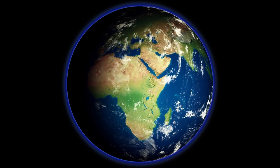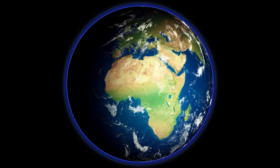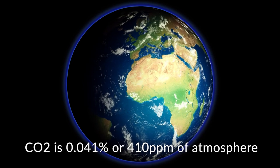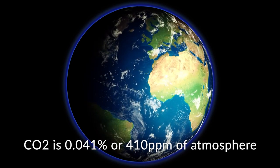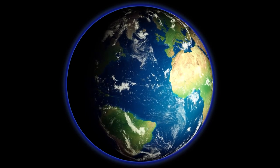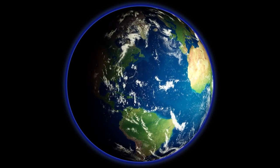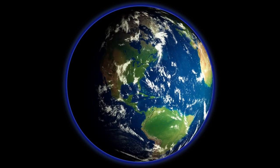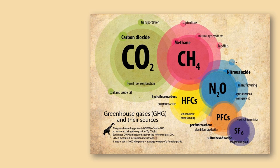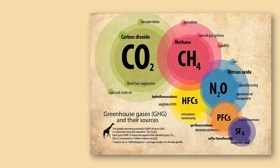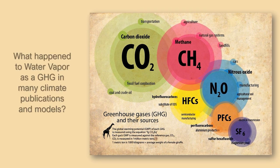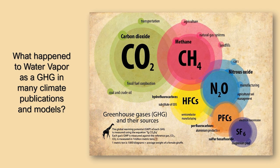With water covering 71% of the Earth's surface, it dominates in many ways. CO2 is currently 0.041% of the atmosphere, or 410 parts per million. With ocean currents playing a significant role on Earth, water in general plays a major role in the Earth's climate. Greenhouse gases are mostly molecules that are triatomic — three atoms per molecule — which can absorb infrared energy. But what has happened to water vapor as a greenhouse gas in many climate publications and models? The answer remains unanswered in many or most publications. Clouds form by water vapor condensing, and that also releases energy.